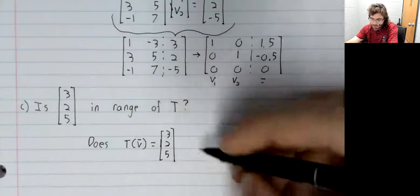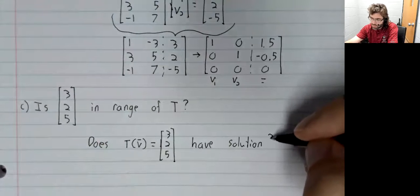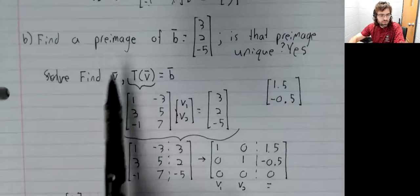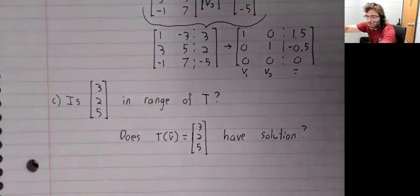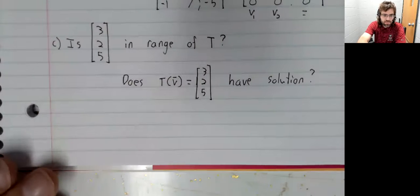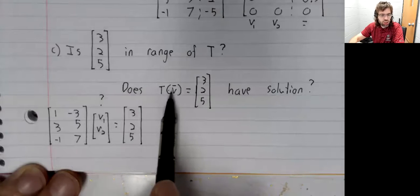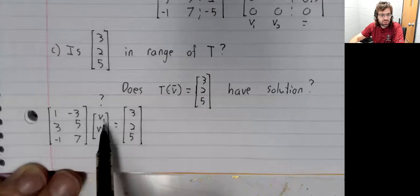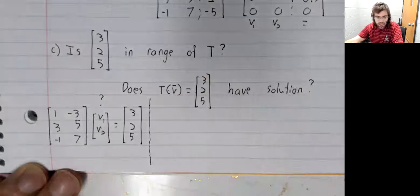So what we're asking here is: is this vector in the range of the transformation? Does T(v) equal this vector have a solution? The way this problem and this problem are framed is different, but we'll approach them the same way. We reframe this in terms of what T(v) actually is - we're asking whether there's a v such that this matrix times v equals this vector.